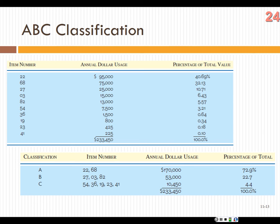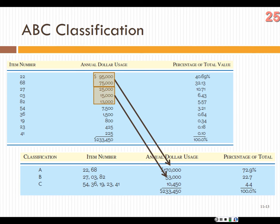In this example, item 22 has annual dollar usage of $95,000 out of a total of $233,450 — that's 40%. Adding up items until you reach 70–80% of total value gives you your A items. The next group around 22.7% (about $53,000) are B items. The remaining ~50% of part numbers represent about 4.4% of total dollars — those are C items. The cutoff is somewhat subjective: if a part number is completely accurate, make it a C; if you've had trouble with it, make it a B.